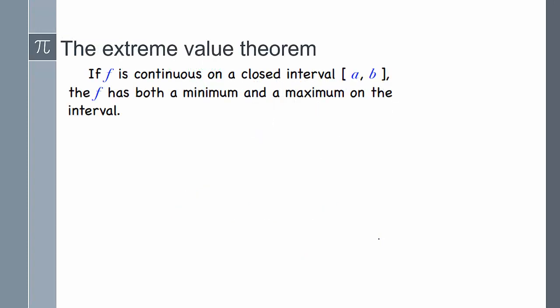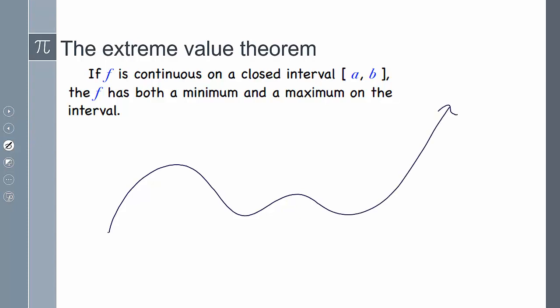The Extreme Value Theorem states that if my function is continuous on some closed interval, it's going to have both a maximum and a minimum value — they just have to exist. So I can draw any picture. The moment I say some closed interval — it cuts off here and cuts off here — there's my maximum, and maybe this and this are my minimum. I have a definitive highest value and definitive lowest values.